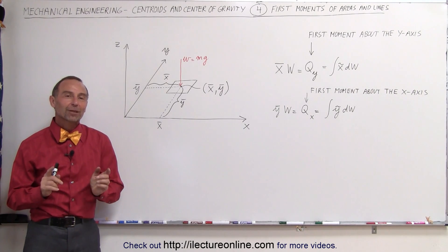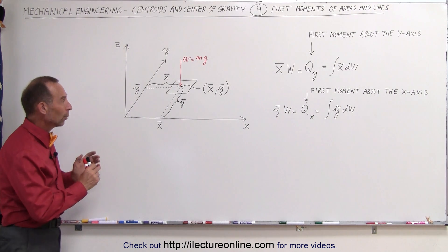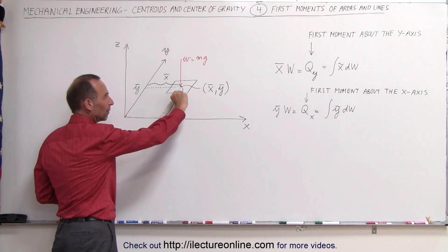Welcome to ElectronLine. Now let's talk about the first moments of an area or a wire. What we have here is a small object, very thin, with a small amount of thickness t.